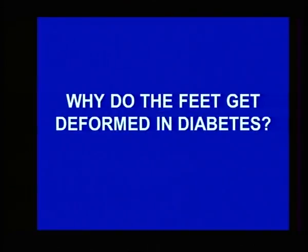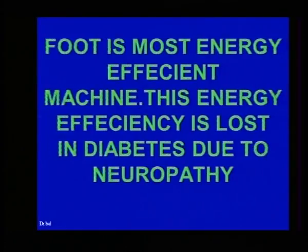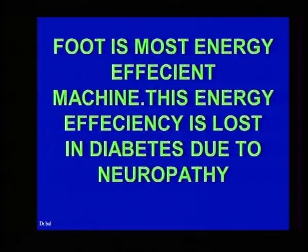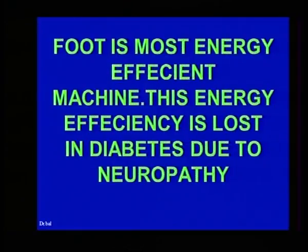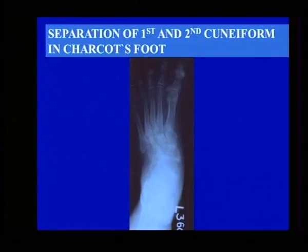Now you must understand why the foot gets deformed in diabetes. The foot, as I said yesterday, is a very energy-efficient machine. A normal person doesn't get corns, calluses, or any deformities except at an elderly age when the muscles are weak. This happens in diabetes because of a metabolic problem. If you just take a simple AP X-ray once a year, you will notice a gap between the first and second cuneiform — which anatomically there is normally no gap.